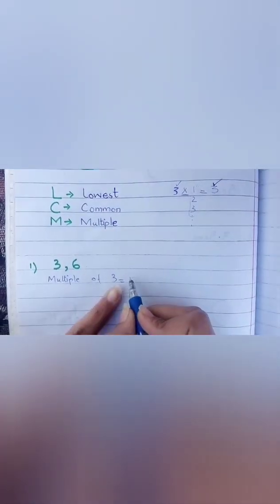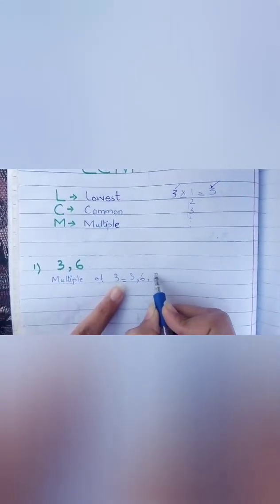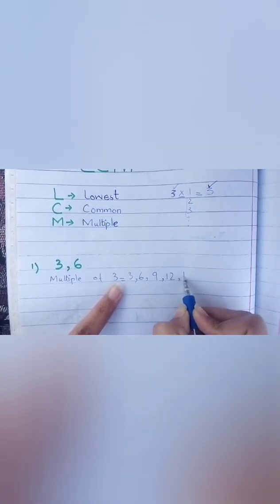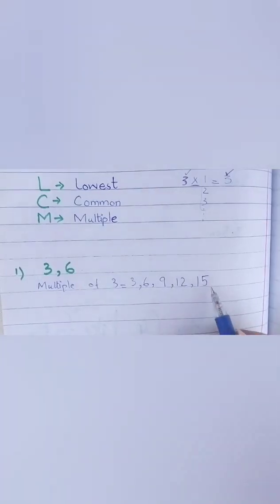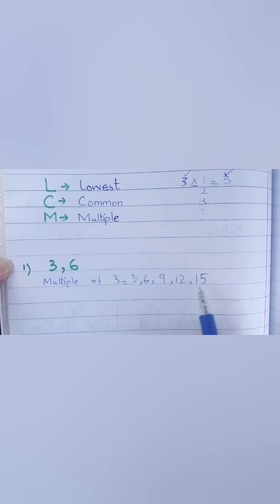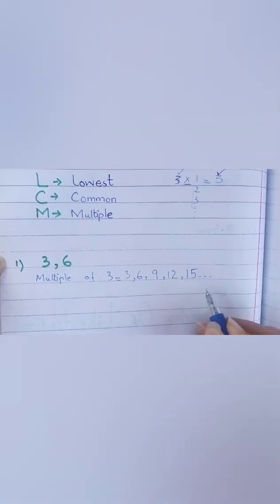Toh three ko jab one se multiply karayenge toh kya aata hai, three. Three twos are six, three threes are nine, three fours are twelve, three fives are fifteen. Toh aap ne five times likhna hai, five times is digit ko multiply karana hai natural number ke saat.